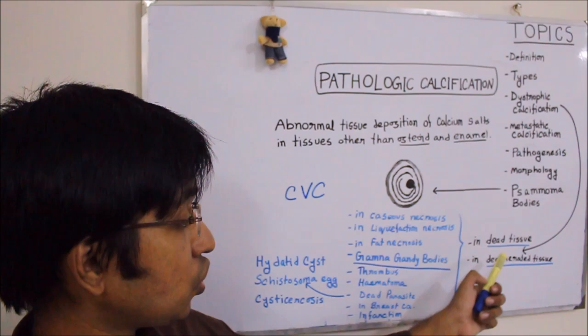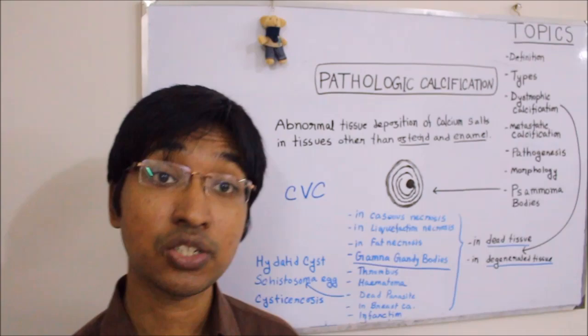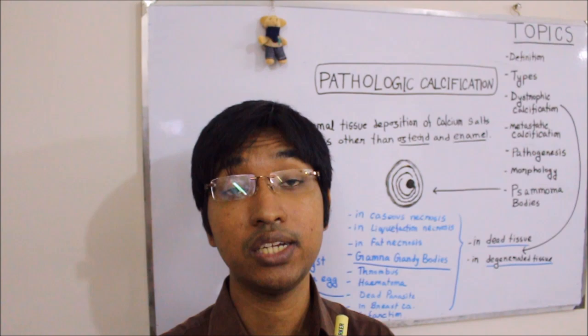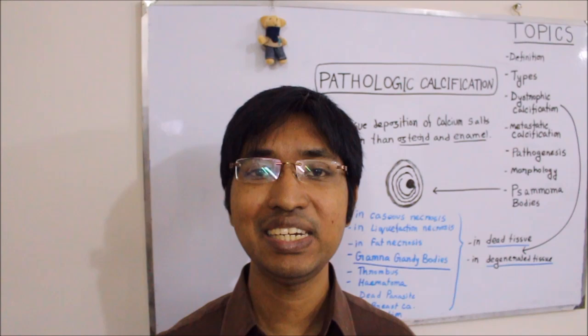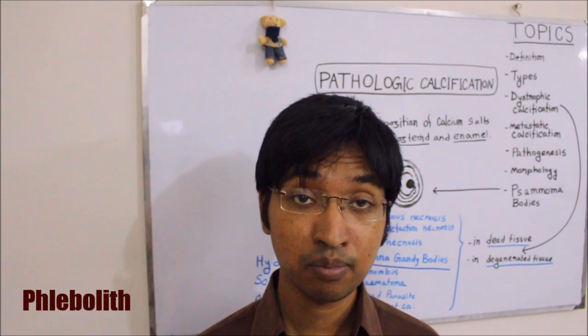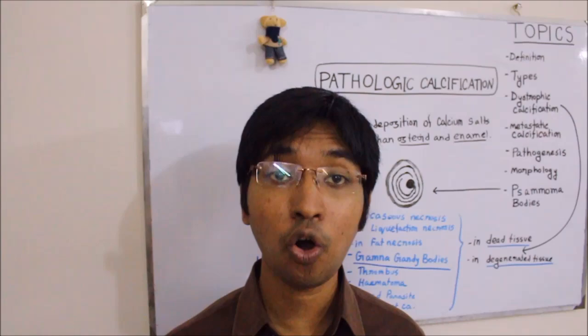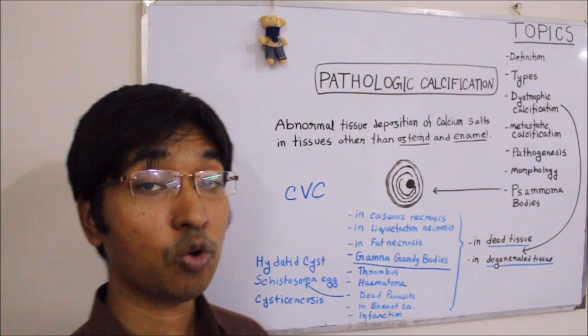Dystrophic calcification in dead tissue can also happen in a thrombus, particularly in a venous thrombus. Calcium salts can get deposited and that will make the venous thrombus hard like a stone, and it is then called a phlebolith. Recall that 'lith' stands for stone — the venous thrombus becomes stony hard and is then called a phlebolith.